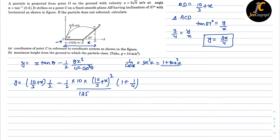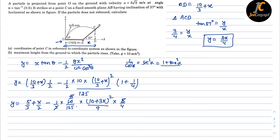Multiplying 1/2 inside the bracket, the first term becomes 5/3 + x/2. For the second term, taking 3 as LCM, the numerator (10 + 3x)² over 9, multiplied by (1/2)·(10/125)·(5/4), simplifies. The entire equation becomes y = 5/3 + x/2 − (10 + 3x)²/180.